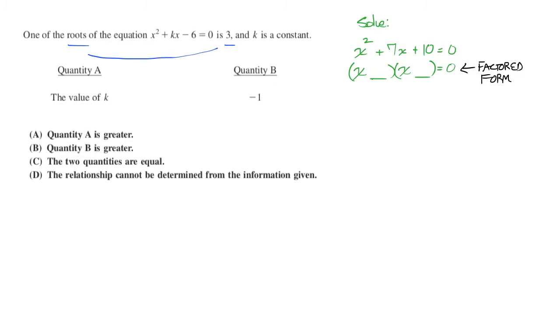The way we figure out those numbers is we make it so that they multiply to positive 10 in this case, and they add to 7. So they have to multiply to the number that's here and add to the number that's there.